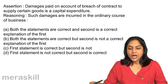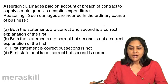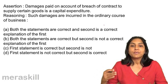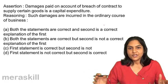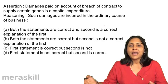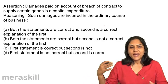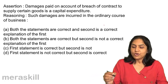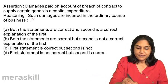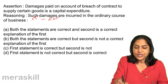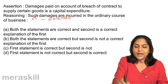Damages paid on account of breach of contract to supply certain goods is a capital expenditure. We buy and sell regularly — that is the trading activity, a regular business activity. There will always be a contract with all our suppliers to buy and sell. If there is a breach of contract, some damages would be incurred. That would be an expense in the ordinary course of business, and therefore it is actually a revenue expense — it cannot be a capital expenditure.